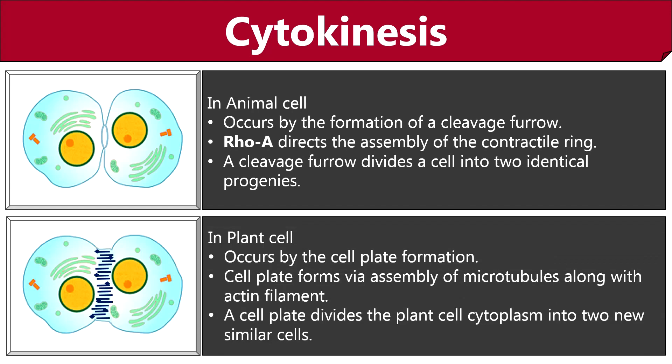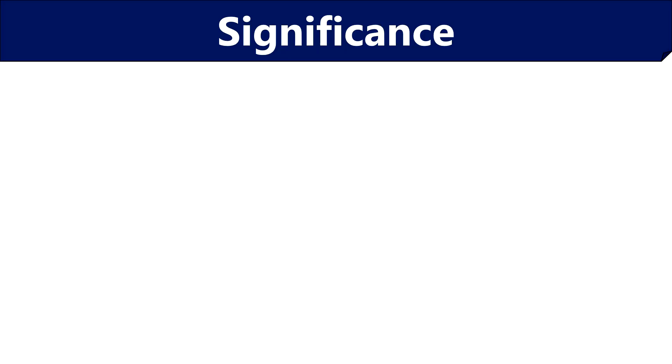In plant cells, cytokinesis occurs through cell plate formation at the middle of the cell. A cell plate forms through the assembly of microtubules along with actin filaments at the vertical plane. Sac-like structures also fuse with this array of microtubules to form a phragmoplast, or cell plate. This cell plate ultimately divides the cell into two identical daughter cells.